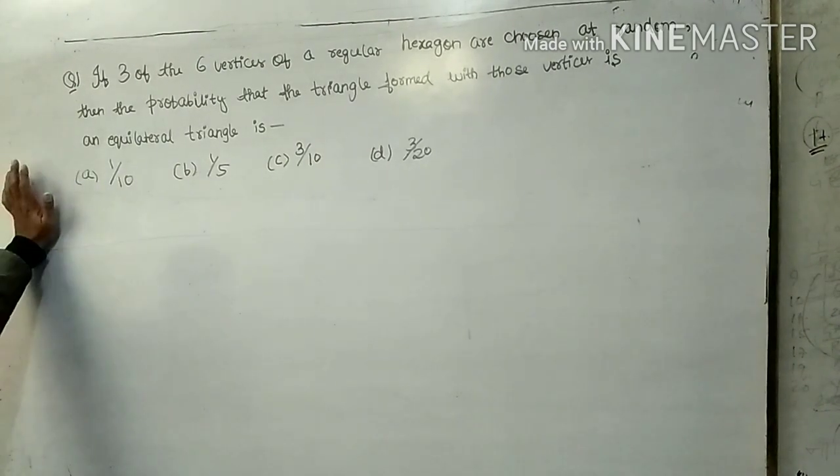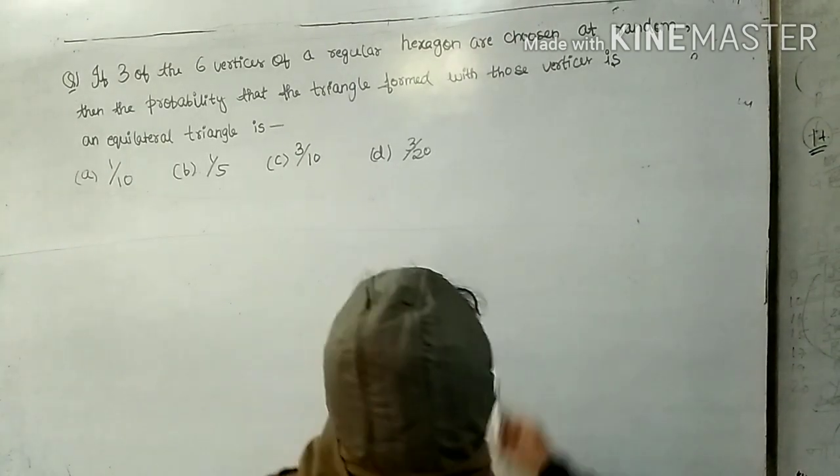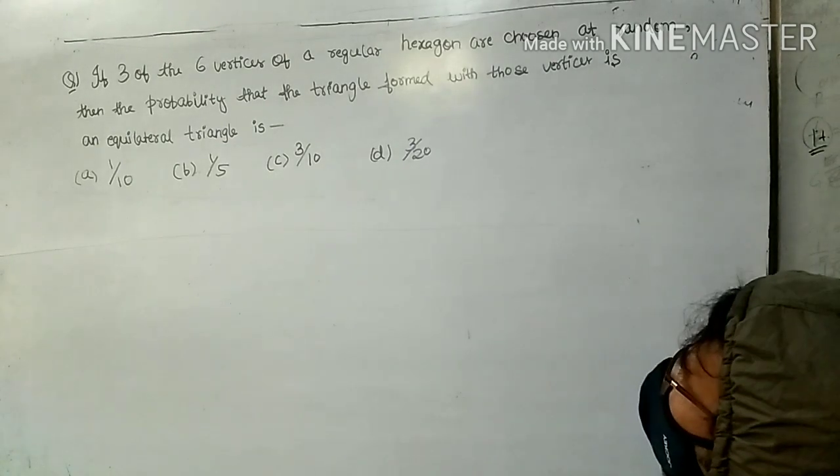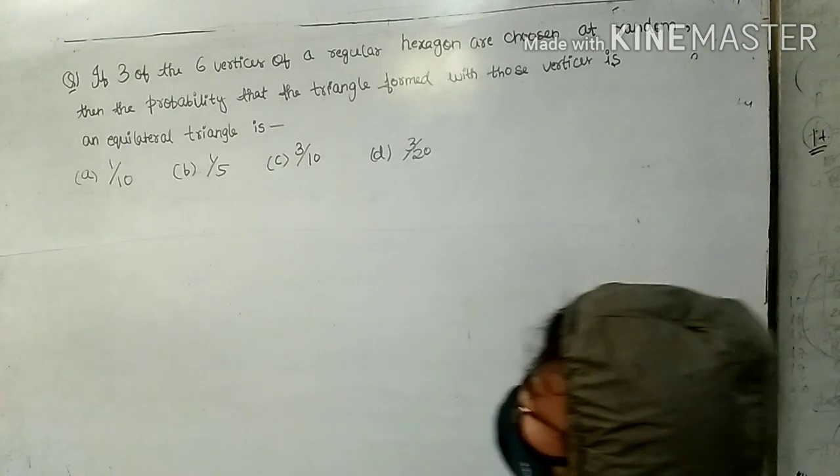If three of the six vertices of a regular hexagon are chosen at random, then the probability that the triangle formed with those vertices is an equilateral triangle.